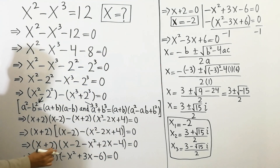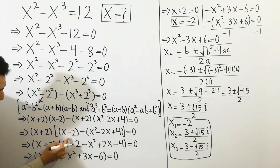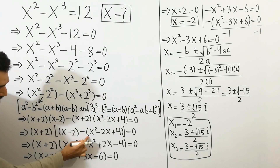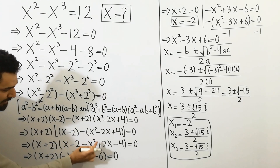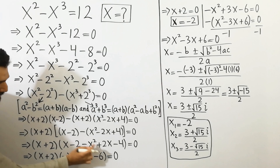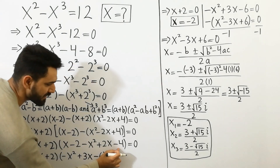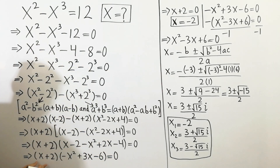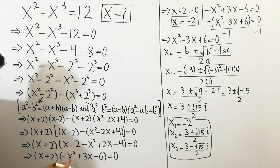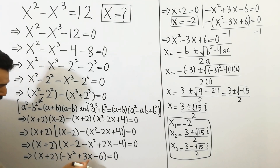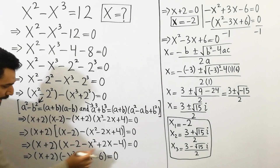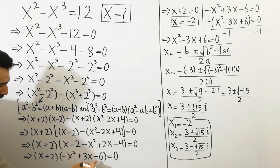x plus 2 as this bracket. And next, we can write here x minus 2 minus x squared plus 2x minus 4 is equal to 0. And next, x plus 2 bracket negative x squared plus 3x minus 6 is equal to 0.